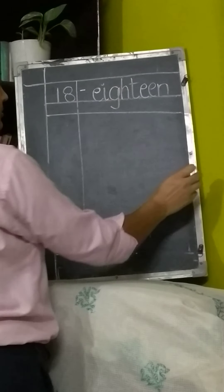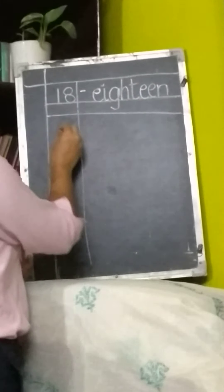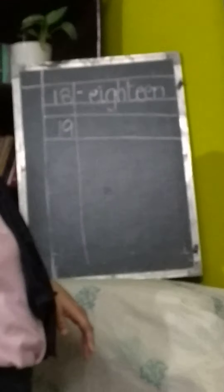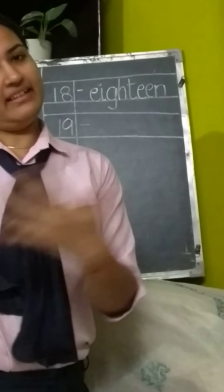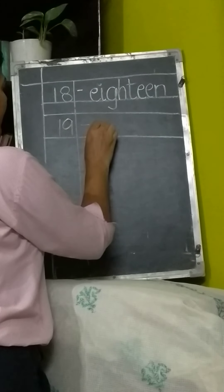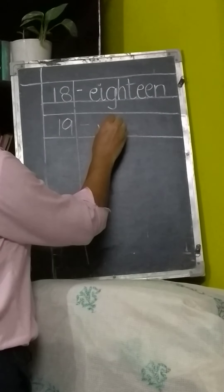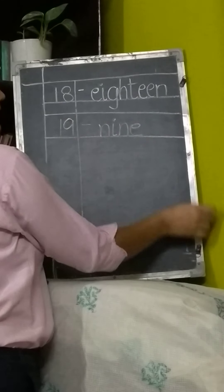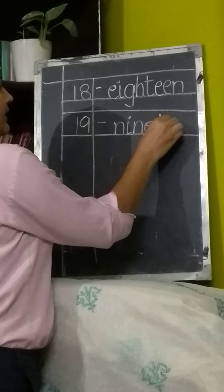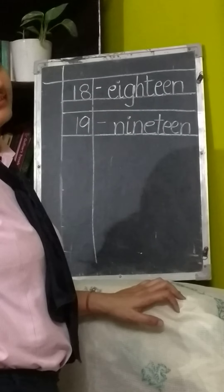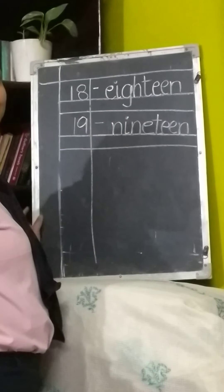Leave a box. Is it clear to you? Yes. 1, 9 — 19. Put a dash here. The spelling is very simple: N-I-N-E for 9, then T-E-E-N. So 19 is N-I-N-E-T-E-E-N.